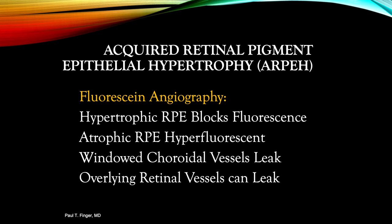Fluorescein angiography is a technique for examining the circulation of the retina and choroid. Using a fluorescent dye and a specialized camera, fluorescein is administered intravenously into the systemic circulation. The retina is illuminated with blue light at a wavelength of 490 nm, allowing angiographic images to be obtained by photographing the fluorescent green light emitted by the dye. As the retinal pigment epithelium covers the choroid, its pigment blocks choroidal fluorescence and thus isolates the retinal circulation.